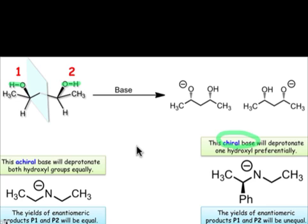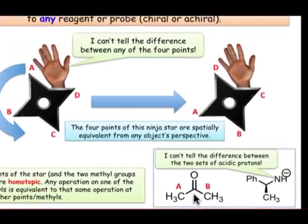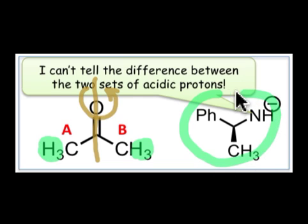If similar groups are related by a rotation, there is no difference in their reactivity, no matter whether the reagent that is reacting with those groups is chiral or achiral. For example, in this molecule of acetone, the protons on the methyl group labeled A are related by a two-fold rotation about the carbonyl axis to the protons on the methyl group labeled B. Because these similar groups are related by a rotation operation, they cannot be distinguished whether the base is achiral or even this chiral base that's shown here. Deprotonation of both sets of protons is equally likely regardless of the reagent that's used.